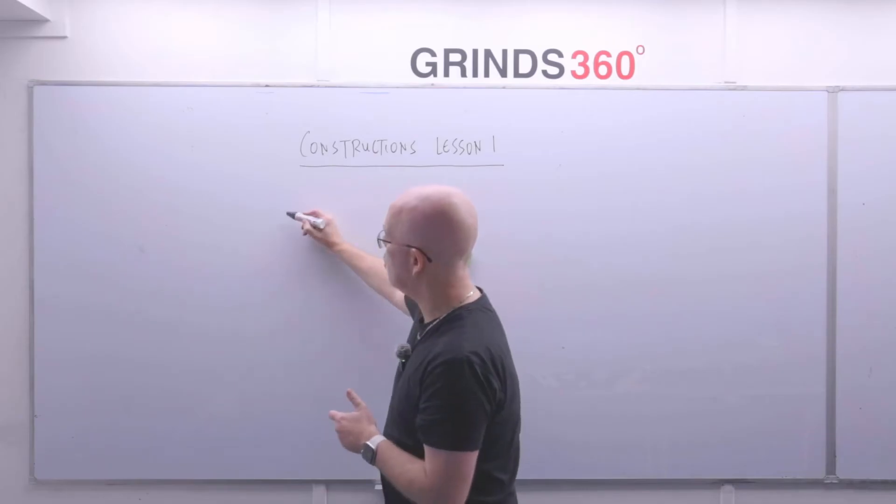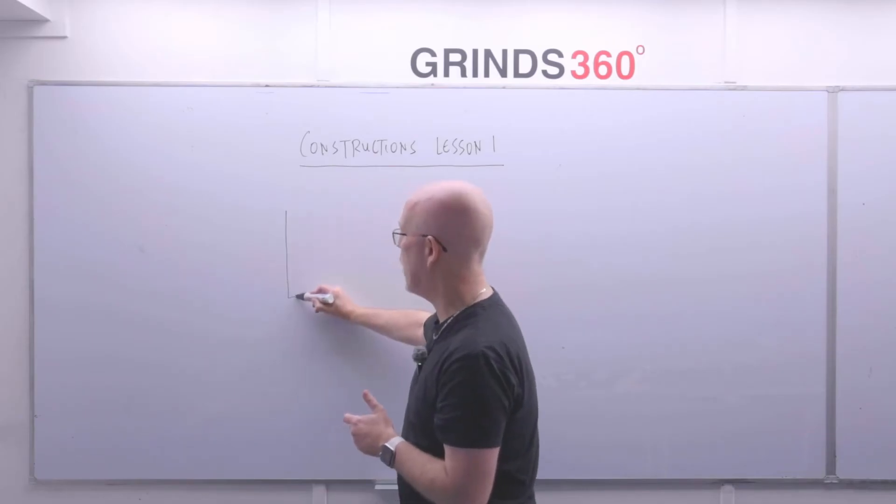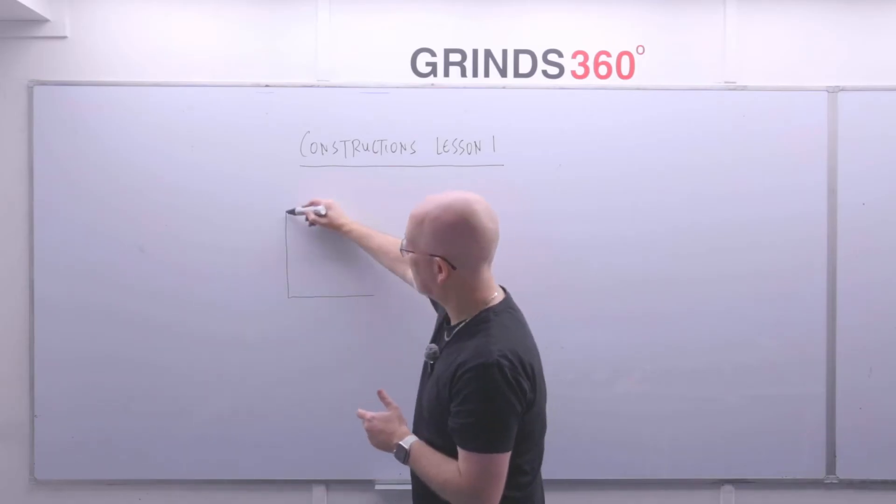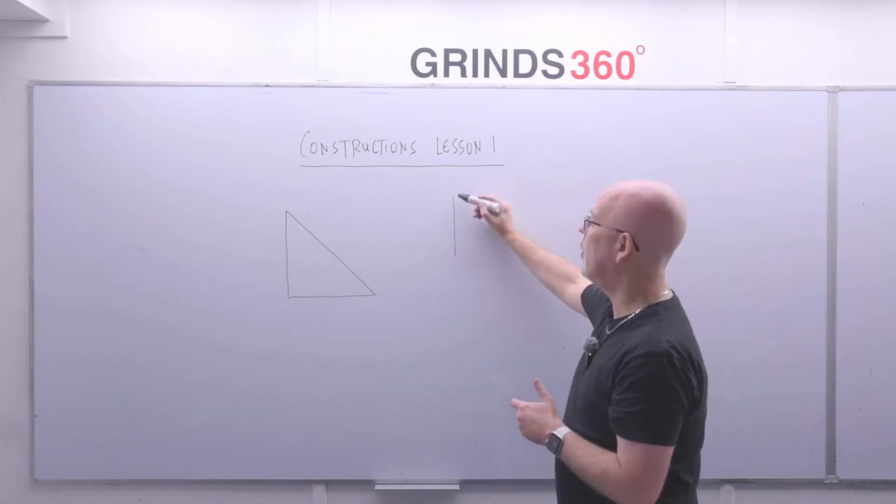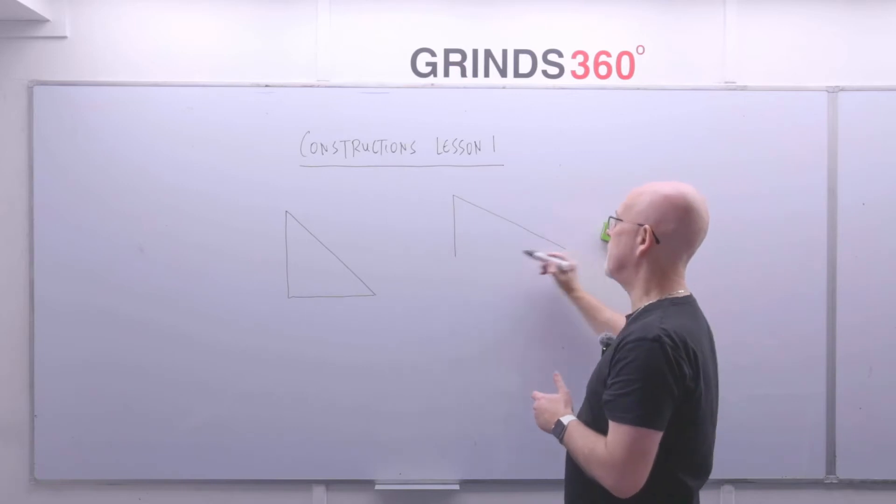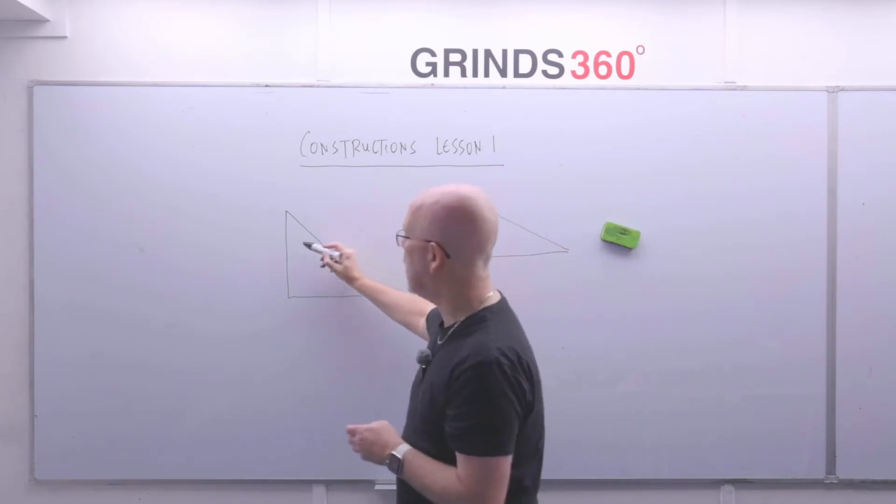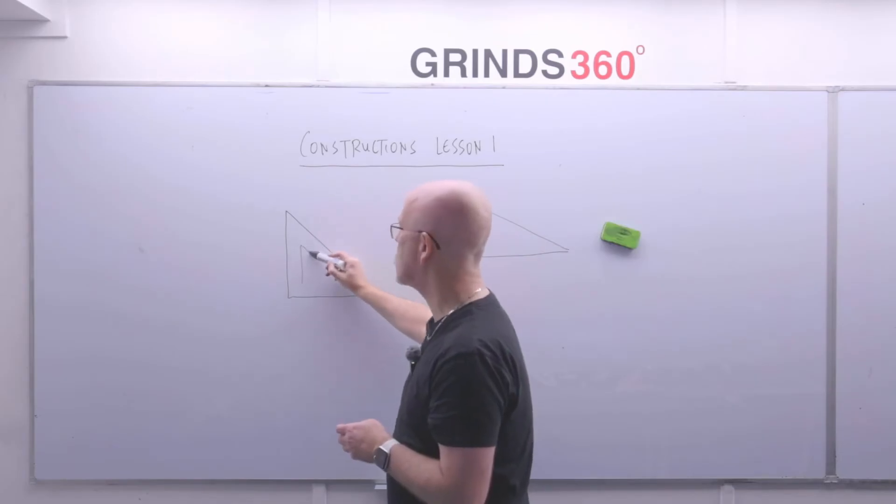So in your geometry set you've got the two triangular set square rulers. Okay, you've got one that looks like that, the slightly smaller one, the isosceles one, and you've got one then which is stretched, which is a bit longer like that. So you've got your two set squares like that. It's this guy here that we're dealing with in this construction, right?